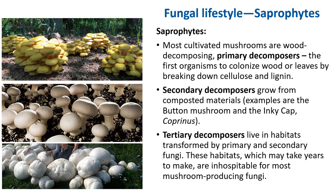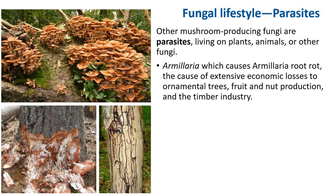Secondary decomposers grow on composted material — for example, the button mushroom and the inky cap (Coprinus). In the compost, other fungi and bacteria break down plant residue into smaller components, producing heat, carbon dioxide, and other residues. Tertiary decomposers live in habitats transformed by primary and secondary fungi; these habitats may take years to form and are inhospitable for most mushroom-producing fungi. Tertiary mushrooms are difficult to cultivate, and some examples are puffballs. Shown here are yellow oyster mushroom (primary), button mushroom (secondary), and puffball (tertiary).